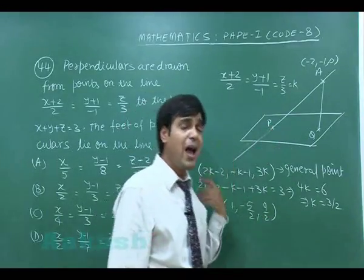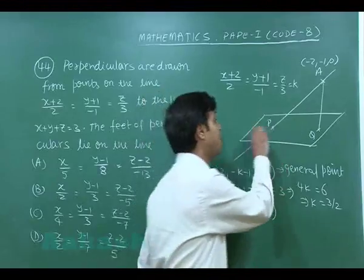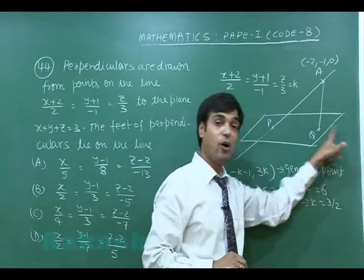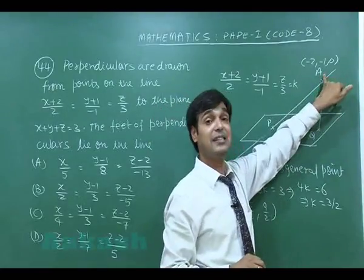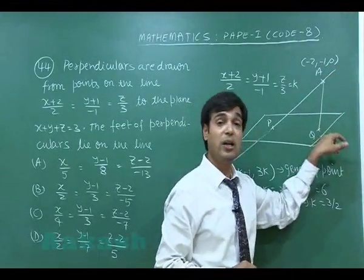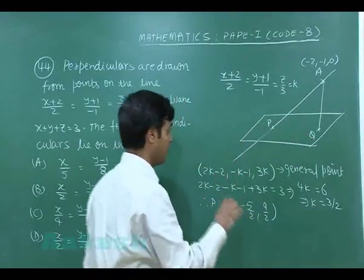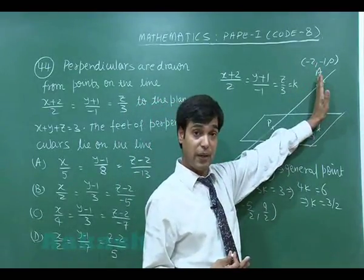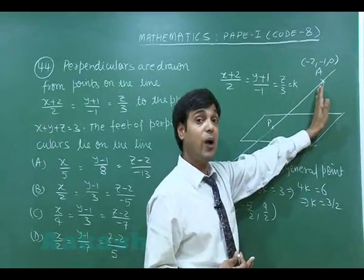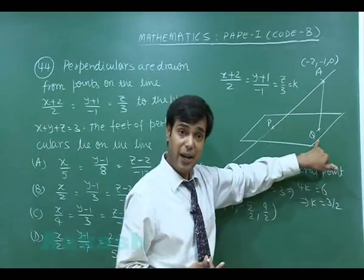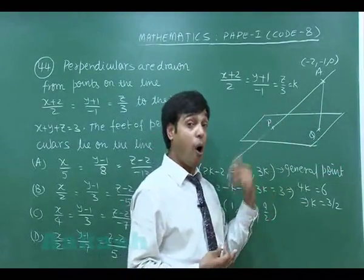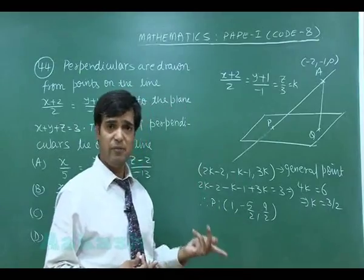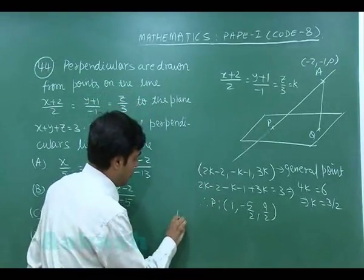We are looking for the line PQ, where Q is the foot of the perpendicular from point A to the plane. To find Q, we write the equation of line AQ. Since the perpendicular from A to the plane has direction ratios (1, 1, 1) — the normal to the plane — the line AQ can be written as x+2/1 = y+1/1 = z/1 = λ.